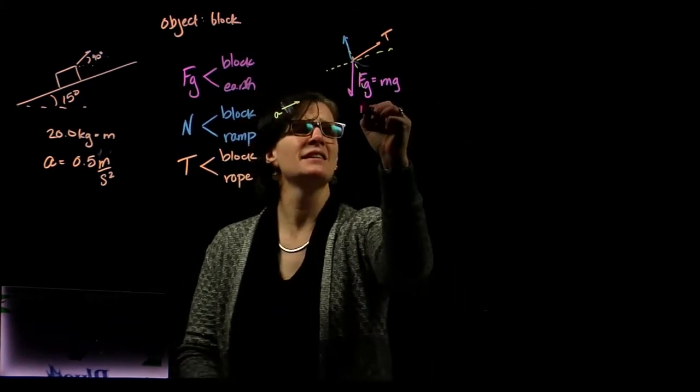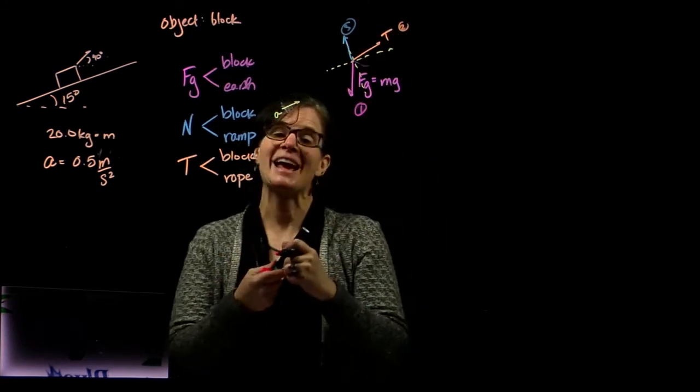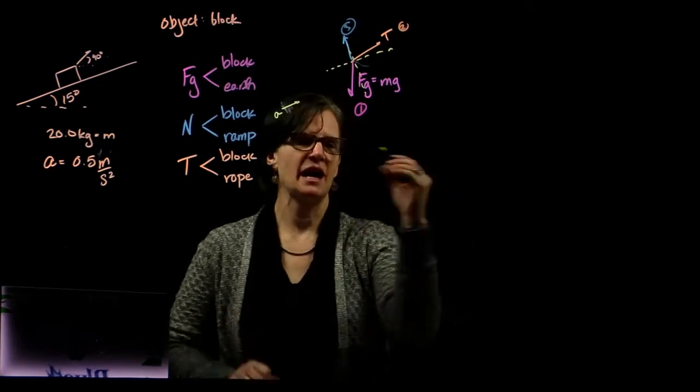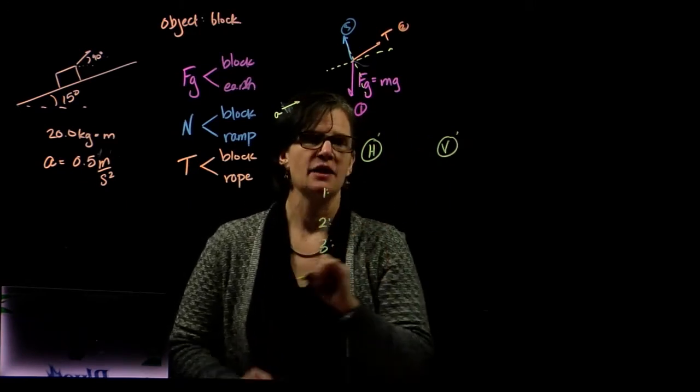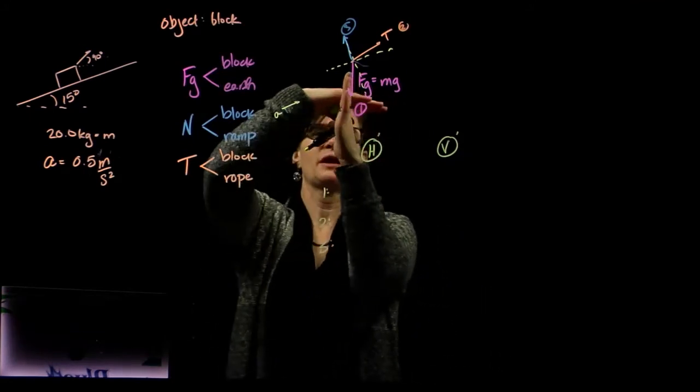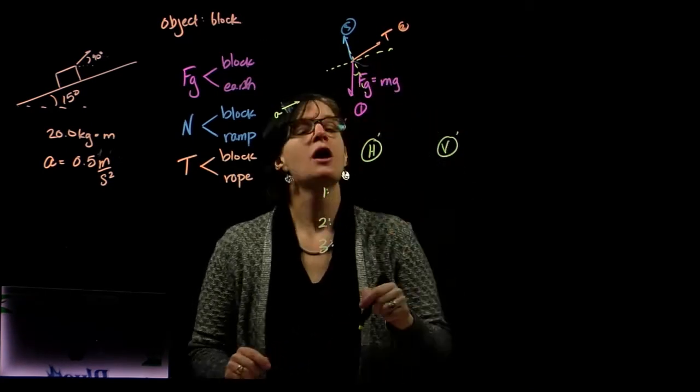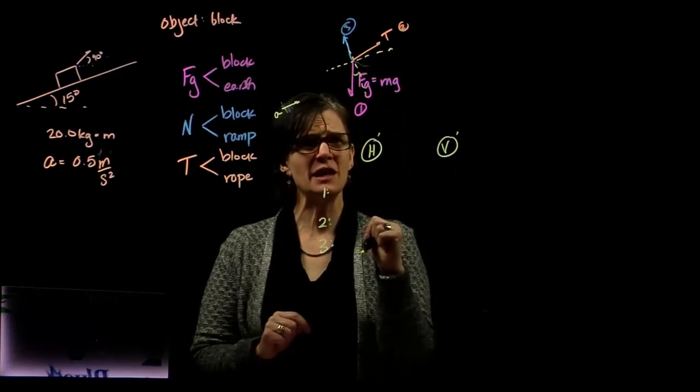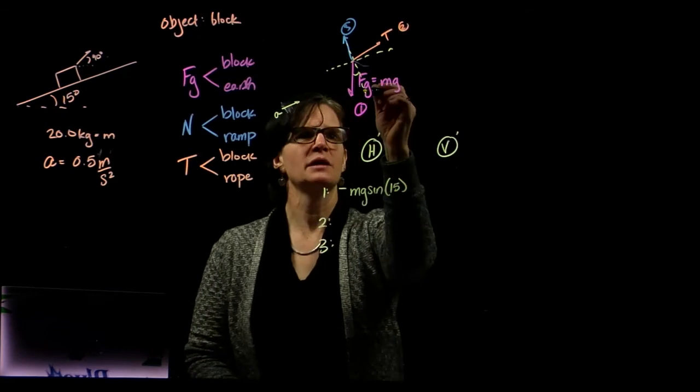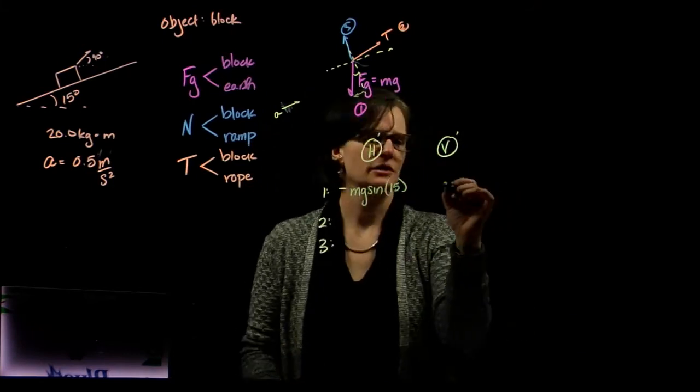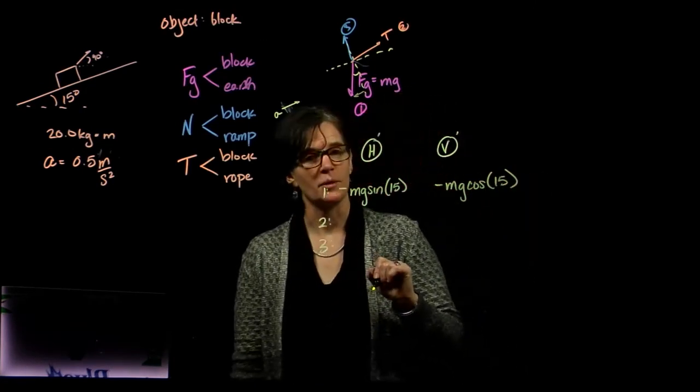Let's number our three forces and separate them relative to this rotated coordinate system so that we can analyze the vectors. We have the horizontal and vertical, these are our prime, our rotated coordinate system. Force 1 is the force of gravity. Our ramp rotates 15 degrees, so we know that the angle between straight down and our vertical prime is 15 degrees. Horizontally, we have minus mg sine of 15 degrees, and vertically we have mg cosine of 15 degrees.